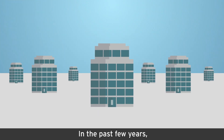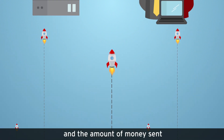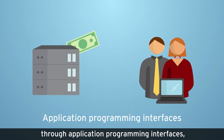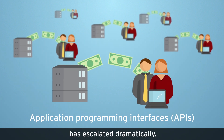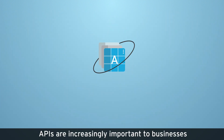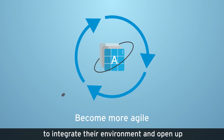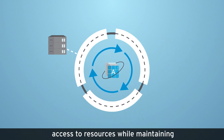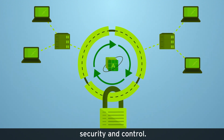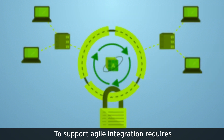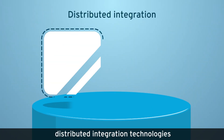In the past few years, the business innovation delivered by software has skyrocketed and the amount of money sent through application programming interfaces, or APIs, has escalated dramatically. APIs are increasingly important to businesses looking to become more agile, to integrate their environment and open up access to resources while maintaining security and control. To support agile integration requires an architectural foundation that includes distributed integration technologies for